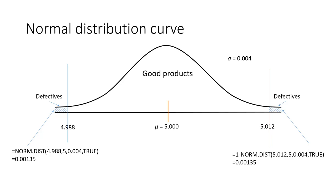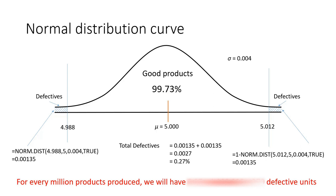Therefore, common causes of variation are something outside our control that we have to live with, while special causes of variation are correctable. The current figure represents only common causes of variation, so the process is always centered at a mean of 5.000. The total defectives are the sum of proportions in both tails: 0.27%. The proportion of good products is 99.73%, meaning for every one million products, there will be 270 defective units.